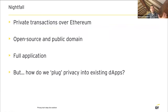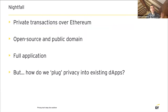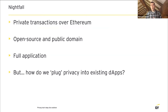A bit of history. About a year ago, EY released Nightfall into the public domain as open source. We gave everything away, hoping that collectively we can get businesses closer to using the public blockchain sooner. What did Nightfall do? It was a full application that enabled private transactions over Ethereum. The technology used was ZK-SNARKs. What I won't be doing in this talk is going into how ZK-SNARKs work — that's quite a hefty subject in itself.